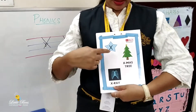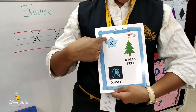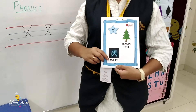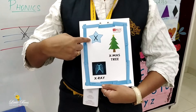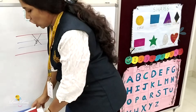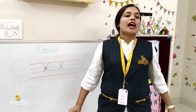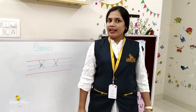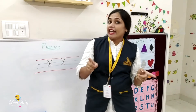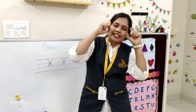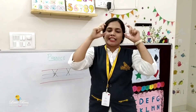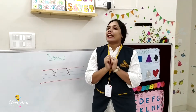X — xylophone, X. X — x-ray, X. X — xylophone, X. X — x-ray. Shall we repeat? X — xylophone, X. X — x-ray. Now let's see a song for the letter X. X, X, take an x-ray. X, X, take an x-ray. X, X, take an x-ray — x-ray of my hand. X, X. Okay children, thank you so much.